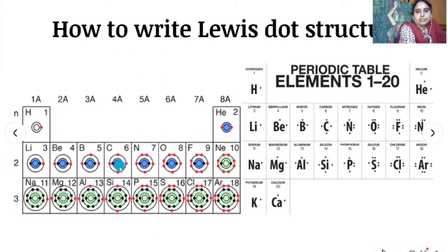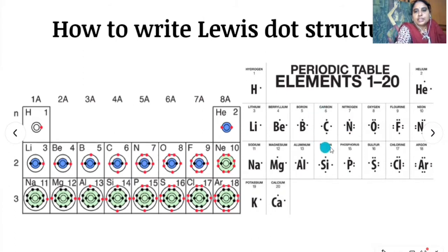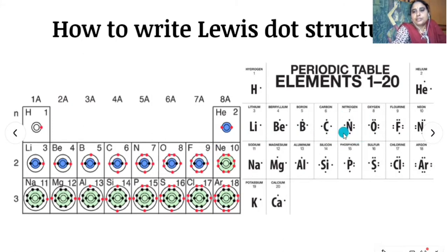For carbon, atomic number is six, electronic configuration is 1s², 2s², 2p². The inner shell contains two electrons and the outermost shell contains four valence electrons, so put four dots on carbon. For nitrogen, atomic number is seven, electronic configuration is 1s², 2s², 2p³. The outermost shell contains five electrons, so write five dots on nitrogen.